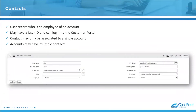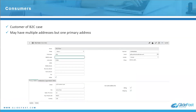Contacts are user records that represent employees of the account. They can have a user ID so they can log into the customer portal, though they don't have to. Contacts can only be associated to a single account, and an account can have multiple contacts. Consumers are the customer records for a B2C case. A consumer can have multiple addresses but only one primary address. You can create a user record associated to the consumer if they need to log into the consumer portal, and if they self-register, that user record is automatically created as a consumer user record, which is an extension of the user table.